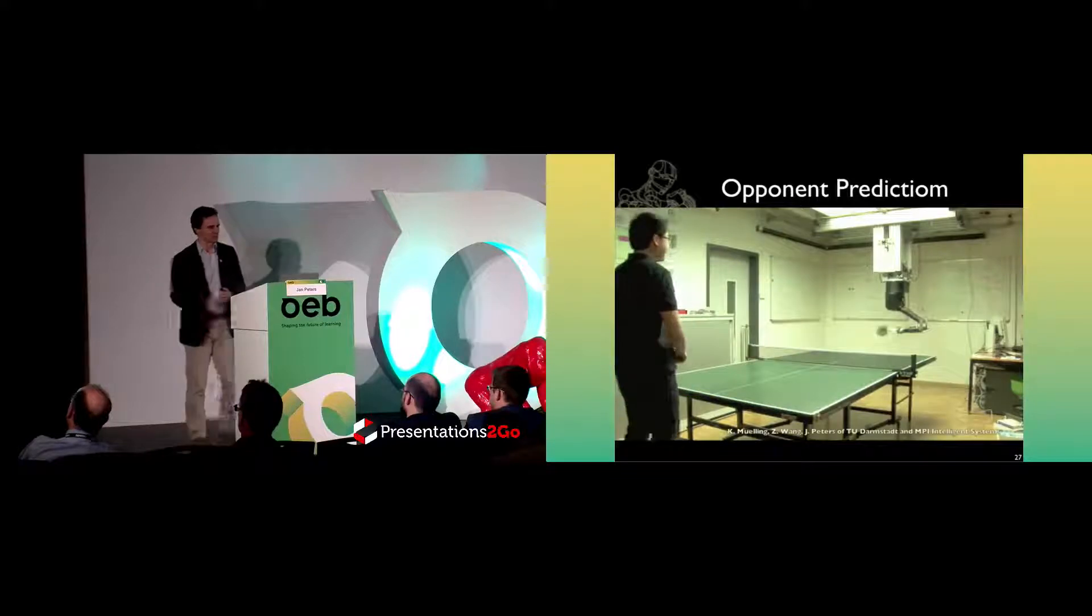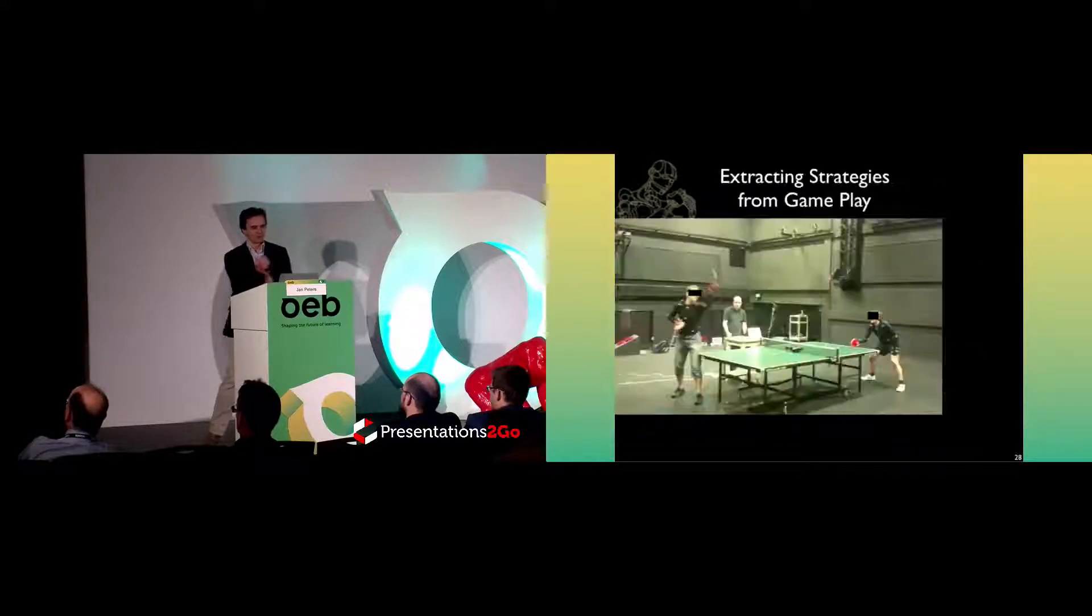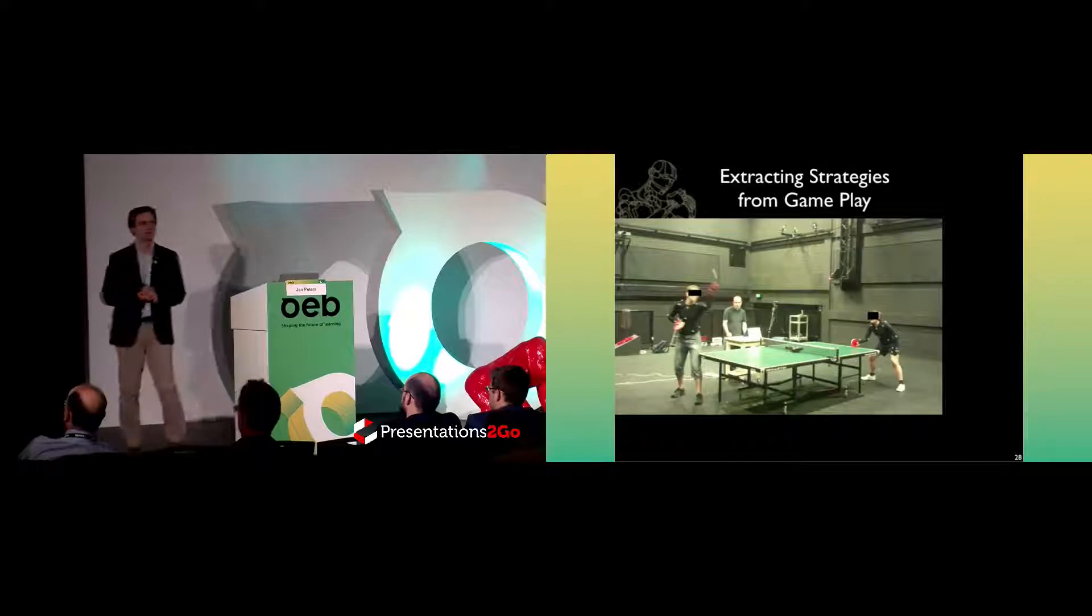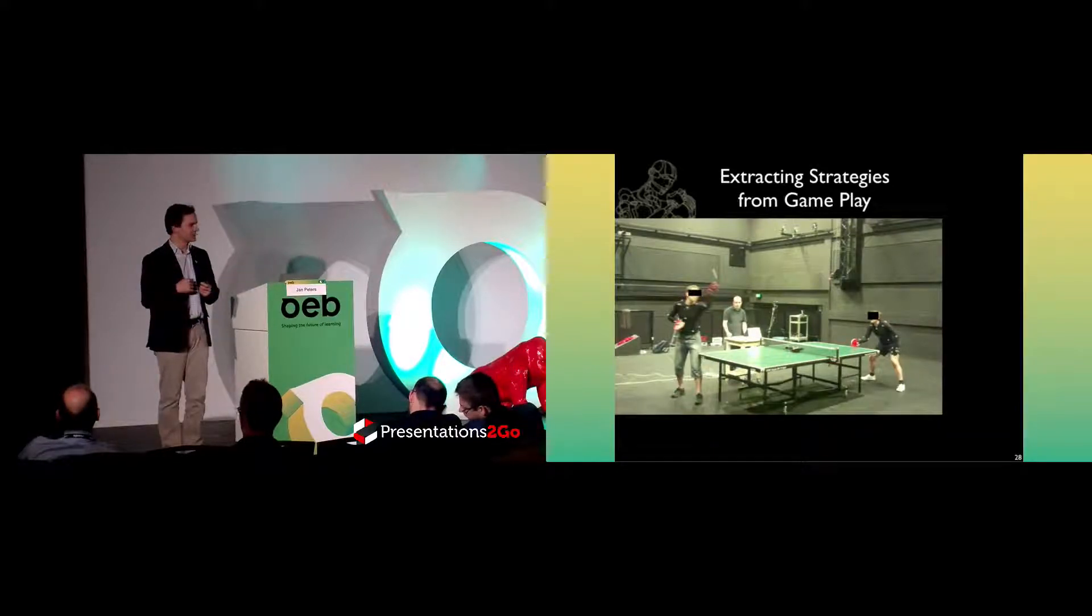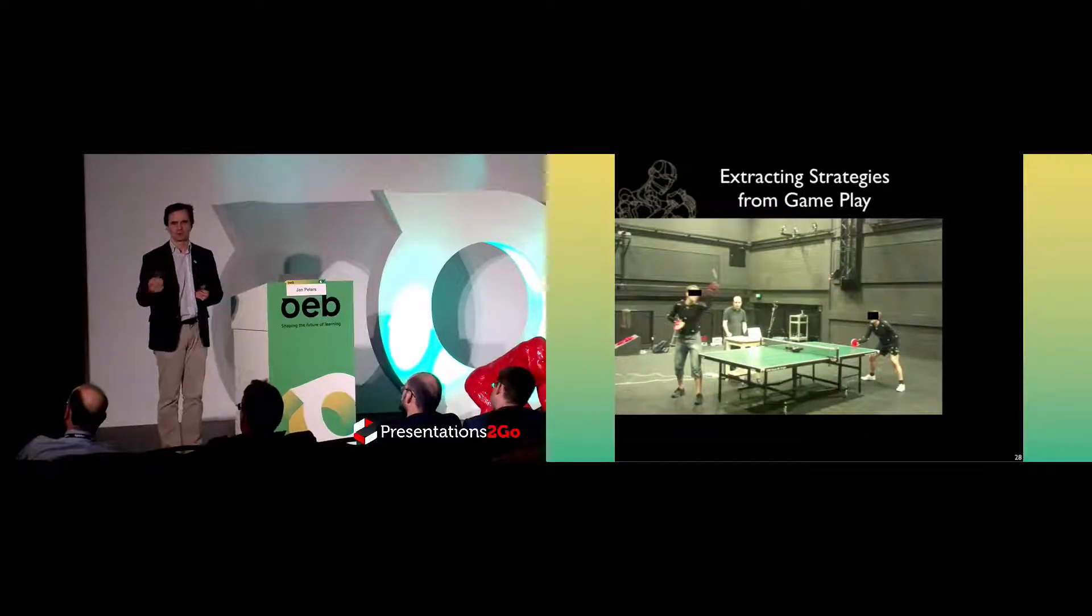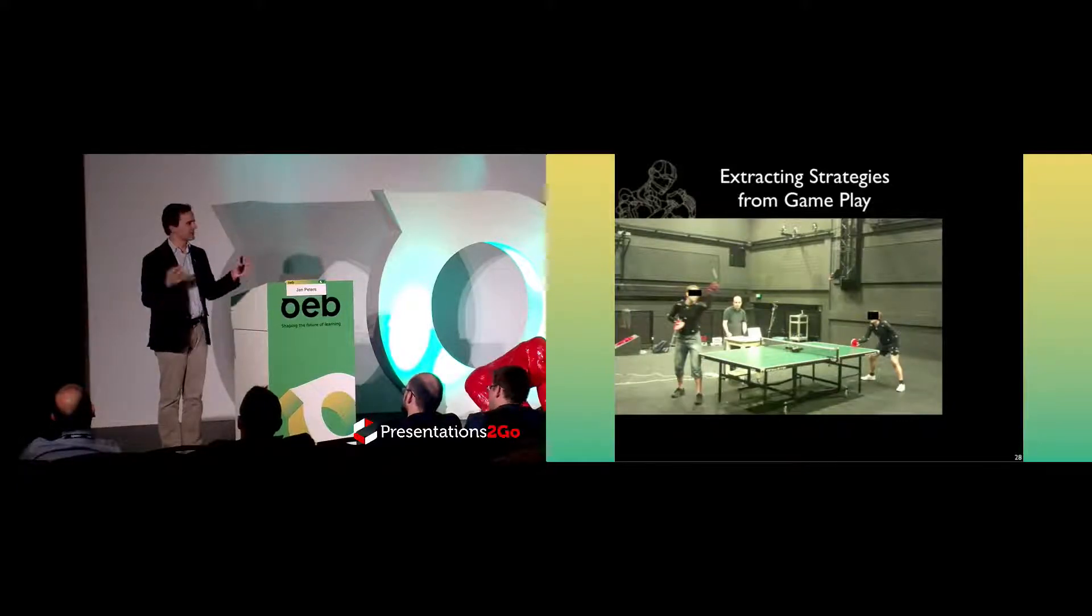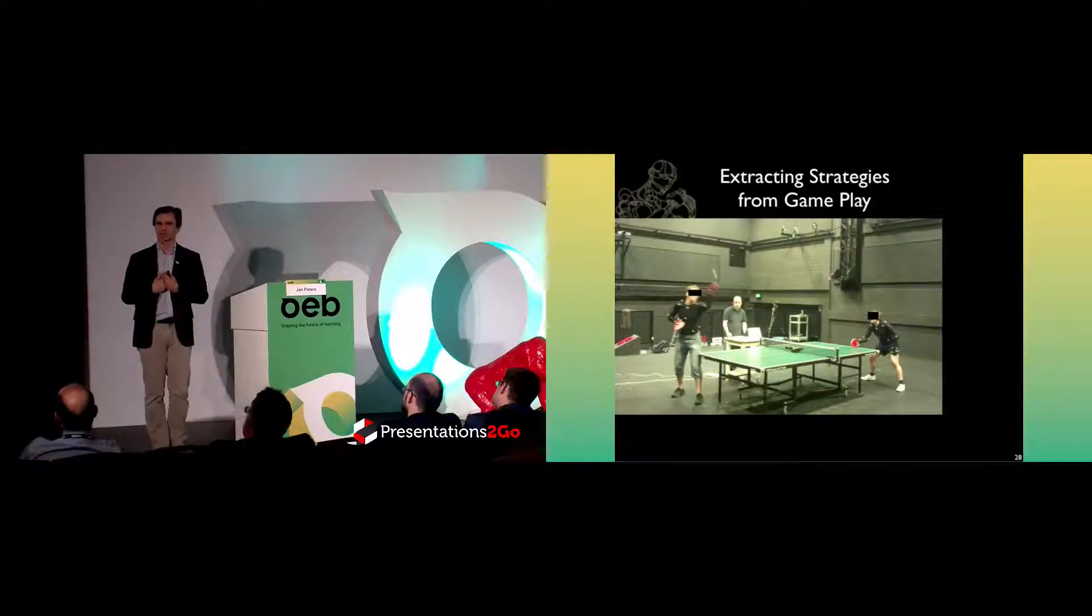We took additional steps to understand what humans are doing. We decided to look into how well can we use our machine learning methods, which we normally use for letting robots study, to understand actually what humans are doing. We obviously took a motor task again, so we took table tennis again. We put two different pairs of human players in there, both laymen and experts. The experts were European champion level, the laymen were people who played once or twice in their life.